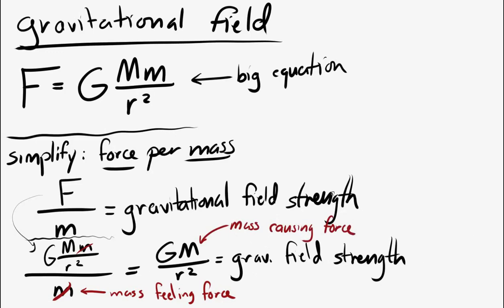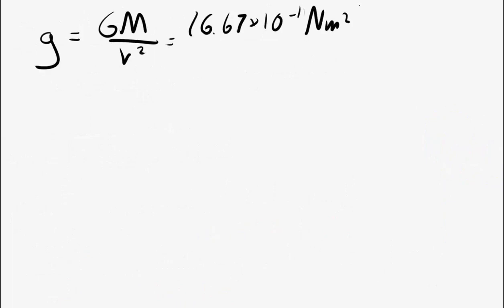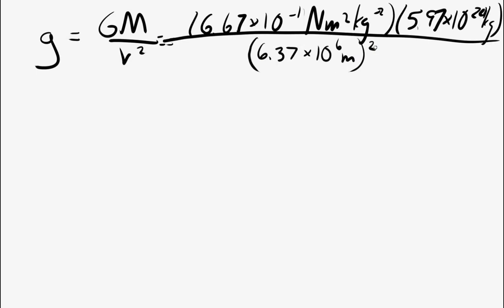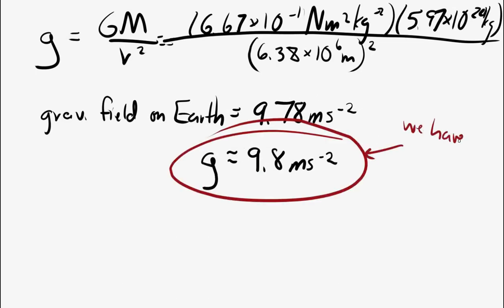We represent gravitational field strength with the letter g, which should look familiar. If you calculate the gravitational field strength on the surface of the Earth — using the mass of the Earth and the radius of the Earth as the distance — you get 9.78, which rounds to 9.8 meters per second squared. That should look familiar: gravitational field strength is the same as the acceleration due to gravity. They mean the same thing.